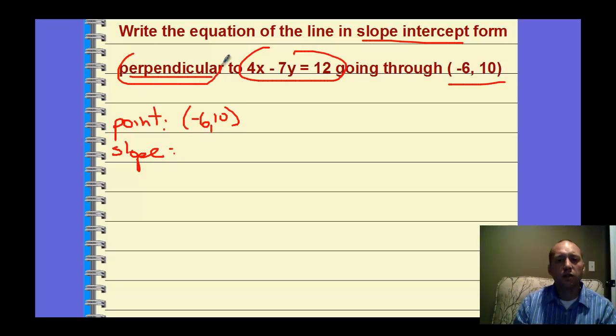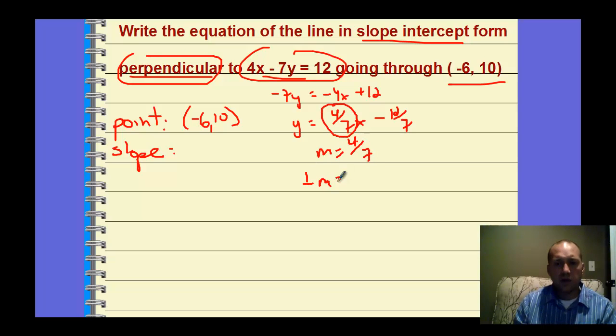So I could subtract 4x to both sides, and I could divide by 7. So I get negative 4 sevenths x minus 12 sevenths, but I don't even care about that value. I care about the slope. So the slope of this one is negative 4 sevenths. That's the slope of this one. But I want a perpendicular slope. So a perpendicular slope is going to be opposite sign and then reciprocal. So that's the slope I want to use.